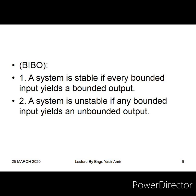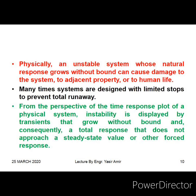A given system is unstable if we give it a bounded input — a well-behaved input — but the output is not well-behaved: it is unbounded, it increases with the passage of time and crosses any bound, becoming infinity. Physically, an unstable system whose natural response grows without bound can cause damage to the system, adjacent property, or even human life. Unstable systems are bad, dangerous, and a problem.